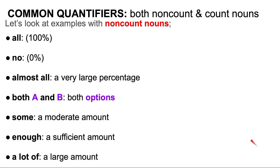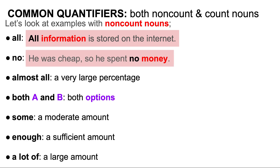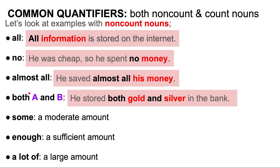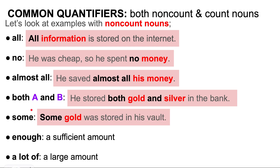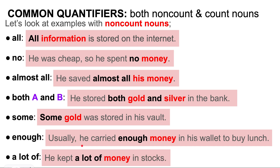Now let's look at examples with non-count nouns. All: all information is stored on the internet. No: he was cheap, so he spent no money. Almost all: he saved almost all his money. Both A and B: he stored both gold and silver in the bank. Some: some gold was stored in his vault. Enough: usually, he carried enough money in his wallet to buy lunch. A lot of: he kept a lot of money in stocks.